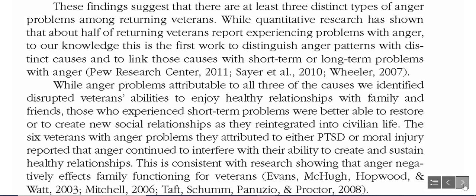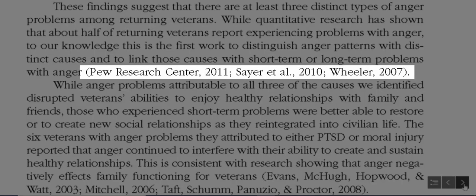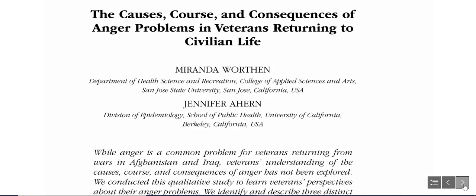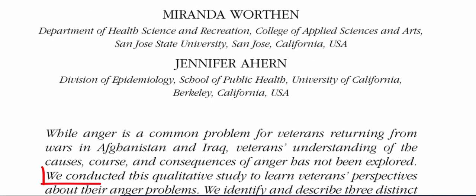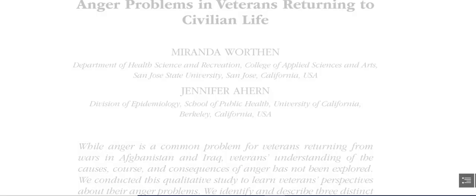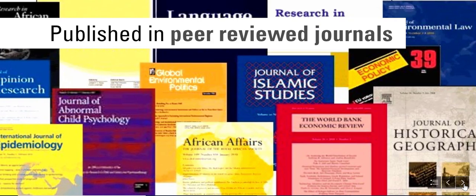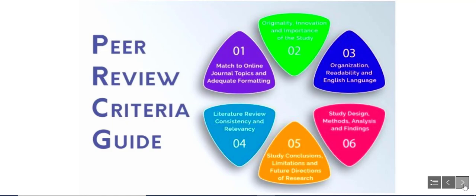The author does substantial research to write the article and includes citations and a list of references so others can follow up on the research. The key here is that the scholarly article is the original research study written by the person or people who did the research, not a summary of research written by someone else. Scholarly journal articles are published in peer-reviewed journals. During the peer review process, a panel of experts in the field review, evaluate, and suggest revisions to the author before the article gets approved to be published in the journal.